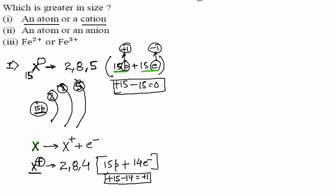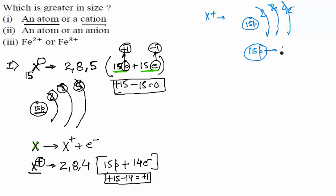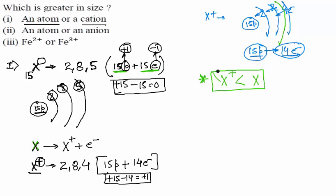In X⁺, the nucleus has 15 protons holding only 14 electrons (2, 8, 4). Because 15 protons are holding fewer electrons, the hold is stronger, so the electrons are pulled a little closer to the nucleus. Therefore the size decreases — the size of the cation X⁺ is less than the size of the atom X.